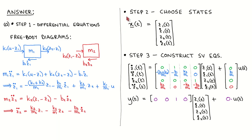The next step is to choose the states. Those of you familiar with this type of mechanical system will probably immediately recognize this as a fourth order system, which means that we have to choose four states. A typical choice for such systems is to choose the position and velocity of each rigid body as states. We therefore choose the position and velocity of the blue object as the first two states, and the position and velocity of the red object as the last two states. Note that the choice of states is not unique, and if you choose different states, your state variable equations and block diagram will differ from mine.